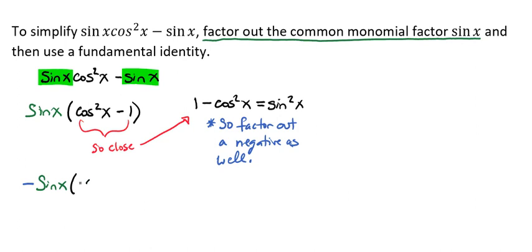that's going to give me -cos²(x) + 1. Because this was positive, and if I take a negative away from it, it makes it negative. And this was negative, and if I take a negative away from it, it makes it a positive.